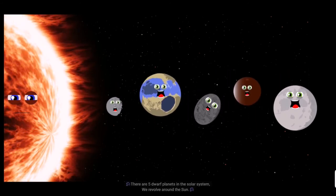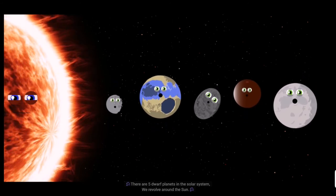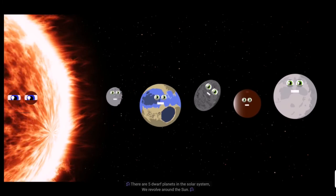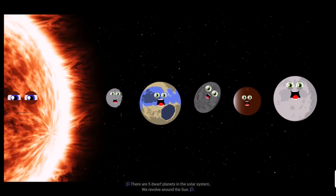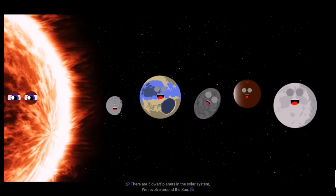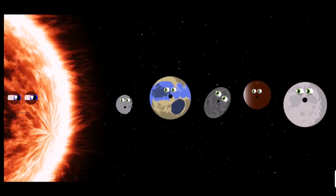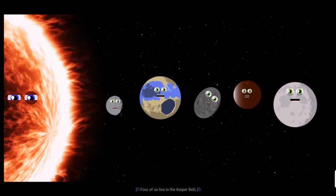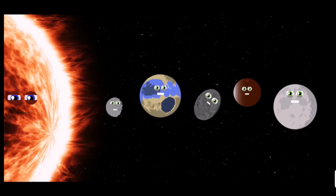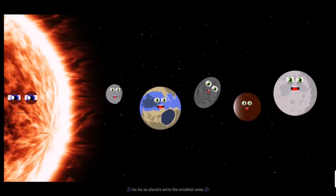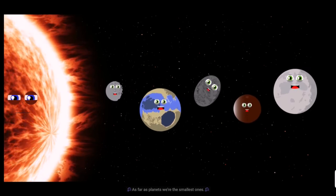There are five dwarf planets in our solar system and we revolve around the sun. Four of us live in the Kuiper Belt. As far as planets, we're the smallest ones.